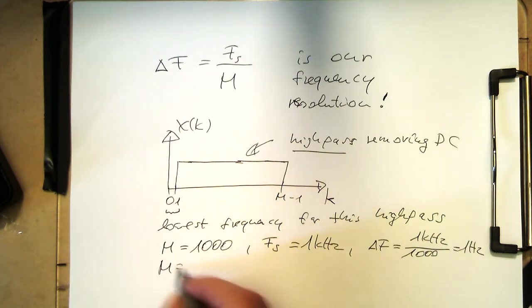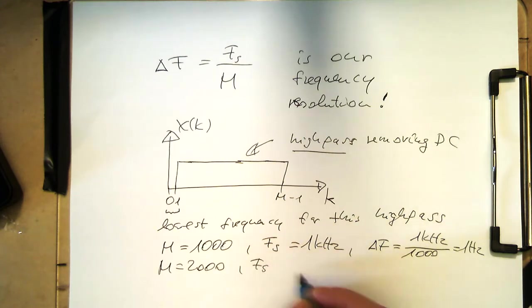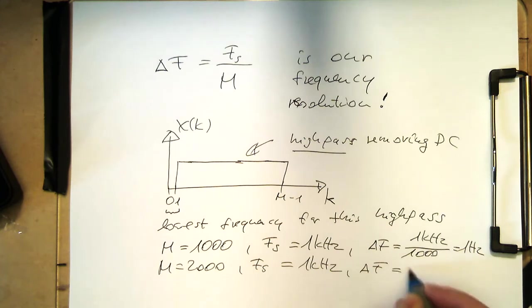So now imagine we are increasing our number of tabs to 2000, 1 kilohertz. Then obviously our delta f is now 0.5 hertz. But remember, this is all theory.